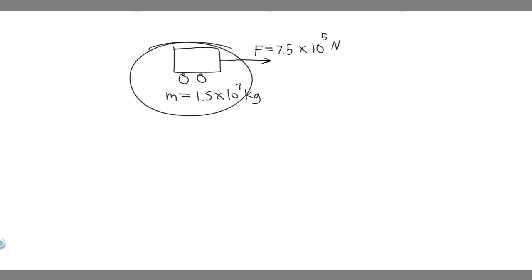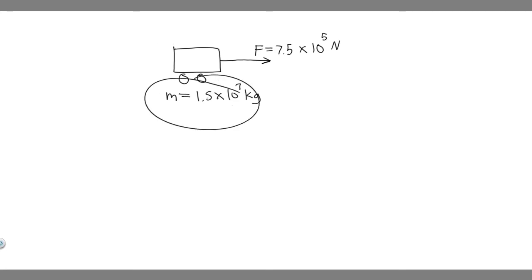So this right here is our train. We know its mass is 1.5 times 10 to the 7 kilograms. It's also going to have some force pulling it, which is 7.5 times 10 to the 5 newtons. What we're trying to find is how long it takes to increase the speed from rest to that value — so we're trying to find some time.